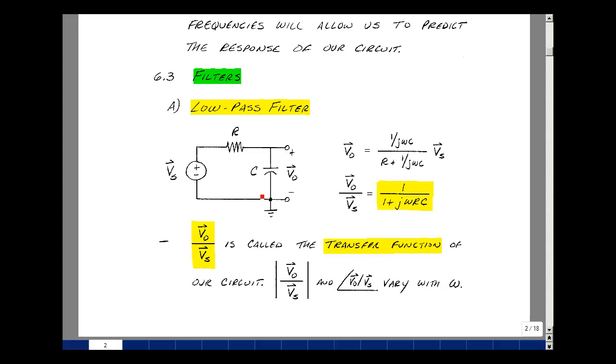Let's look at this RC circuit in the frequency domain. I've got a phasor input, I've got a phasor output. Voltage across here is just a voltage divider, since this current is the same as this one. It's going to be the impedance of the capacitor, which is 1 over jωC, over the sum of the two, which is R plus 1 over jωC.